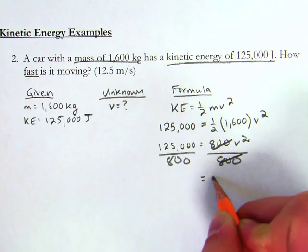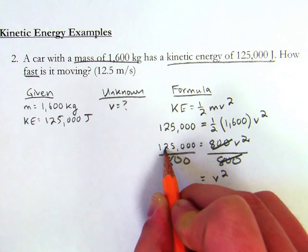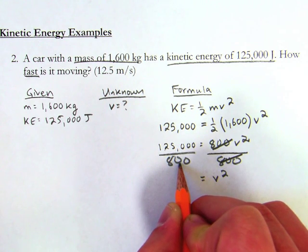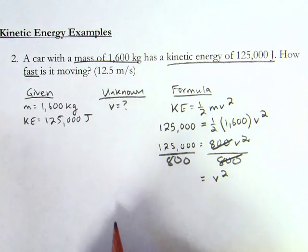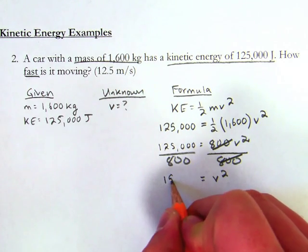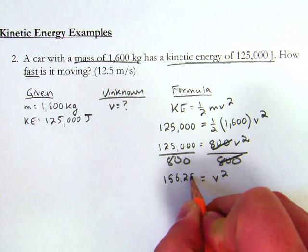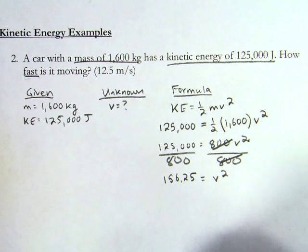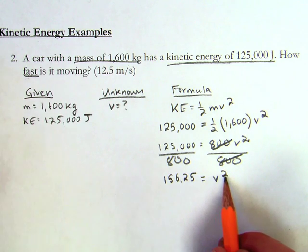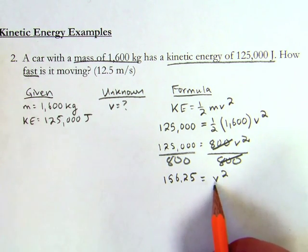And I know 125,000 over 800. If I plug that in my calculator, I'm going to get 156.25. Now, am I done? Not quite, because this is v squared, and I'm looking for v by itself. Very simple.